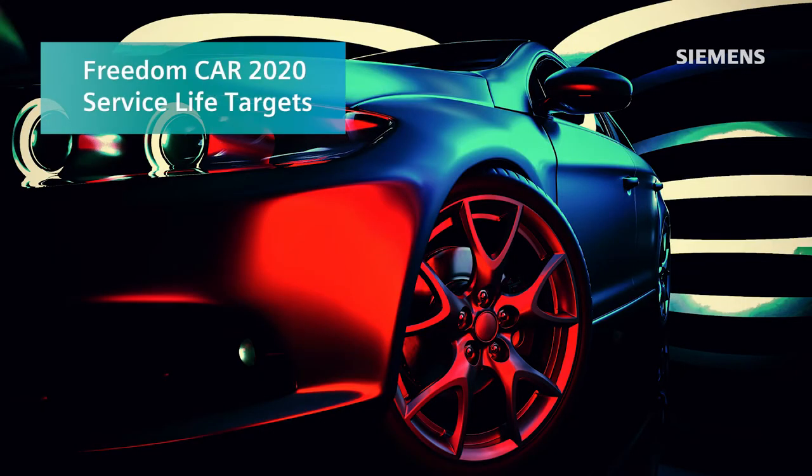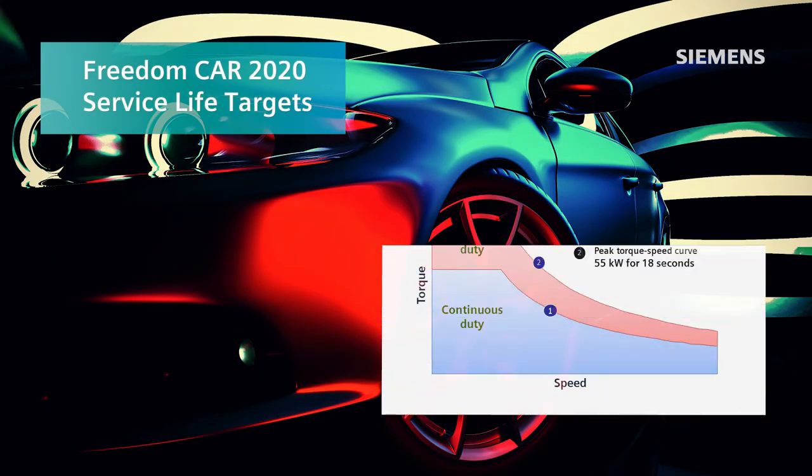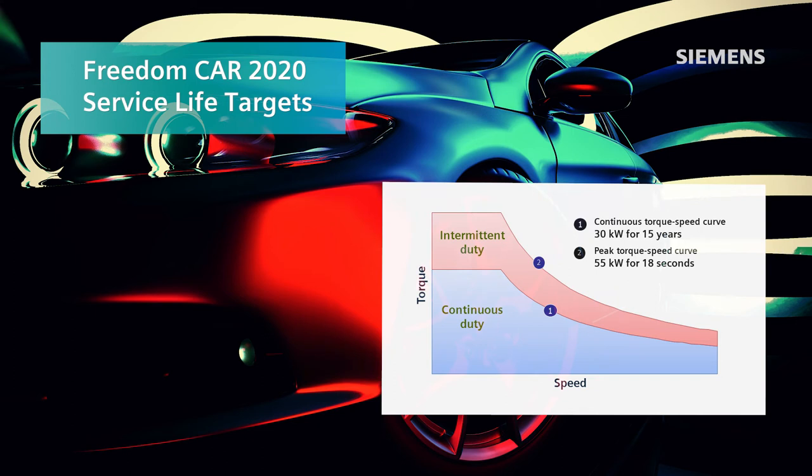According to Freedom Car 2020 targets, a traction motor should deliver 30 kilowatts of continuous power and 55 kilowatts of peak power for 18 seconds for 15 years. In other words, the traction motor should be irreplaceable over the lifetime of the vehicle.